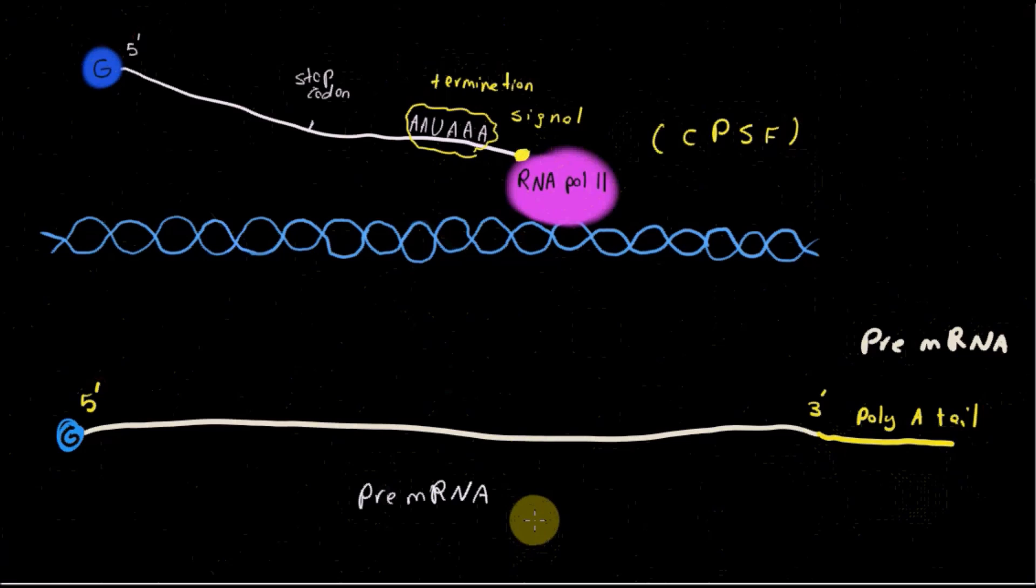So this guy you see over here is our pre-mRNA in eukaryotic cell, which will go through some modifications to give rise to mature mRNA.